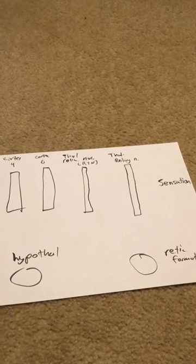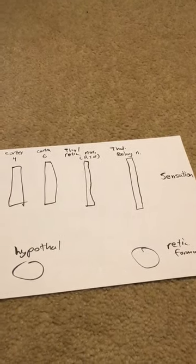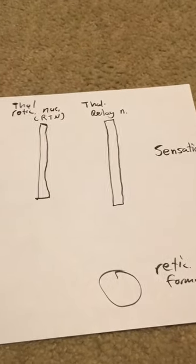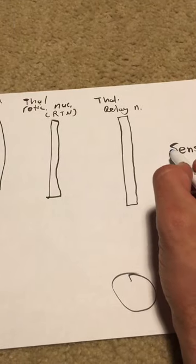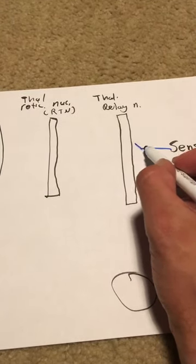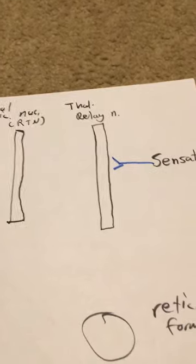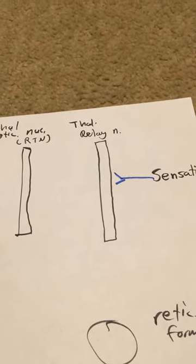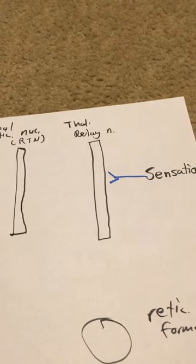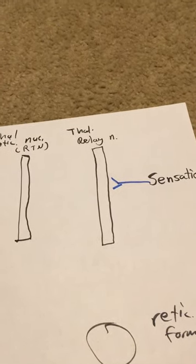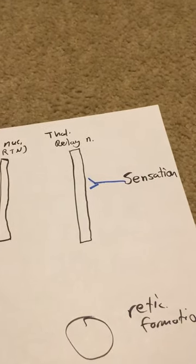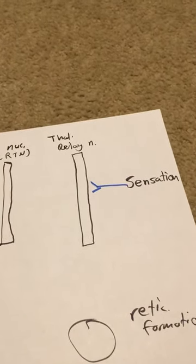So what would happen is if there is no Thalamic Reticular Nucleus acting at this time, you'd experience a sensation. Let's say you feel pain temp in your foot. Pain temp in your foot is gonna travel until it hits my Thalamic Relay Nuclei. In this case it would be VPL, but the Thalamic Relay Nuclei could be anything like VPL, VPN, VA, VL, MGN, LGN, etc.